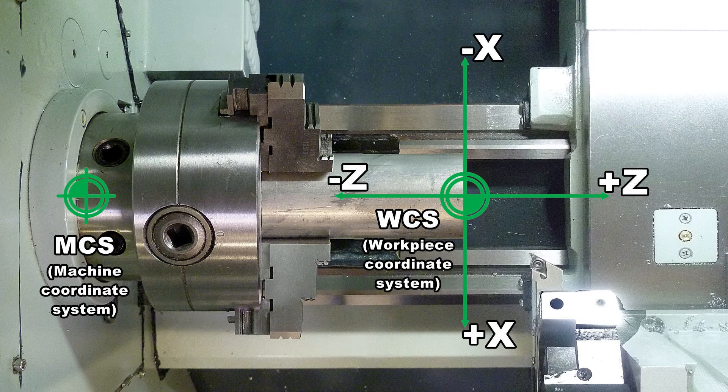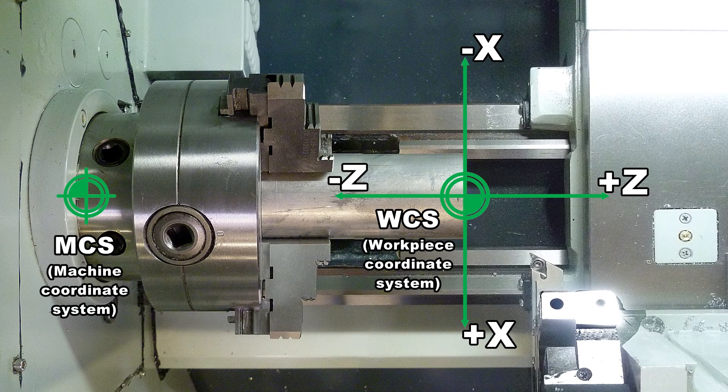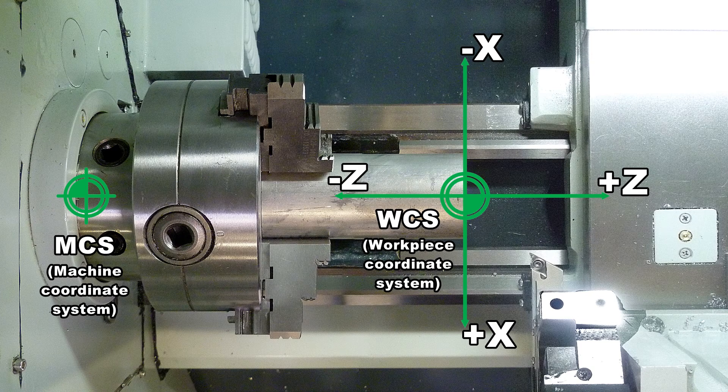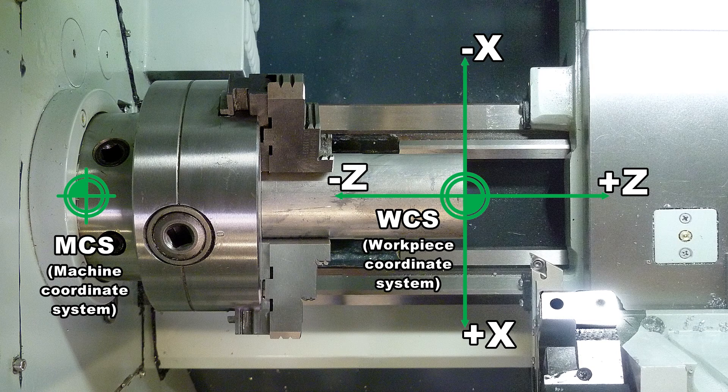The primary function of the coordinate system is to ensure that the tool length and tool radius are calculated correctly in the respective axes.